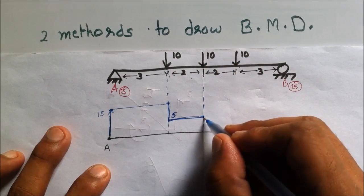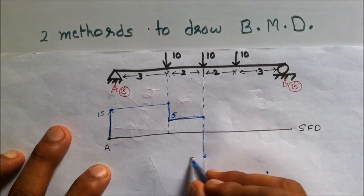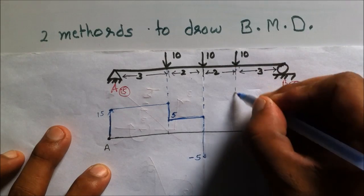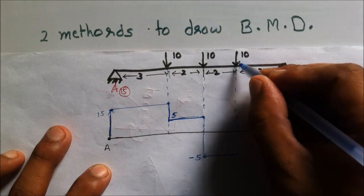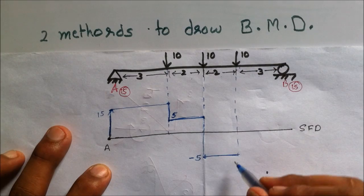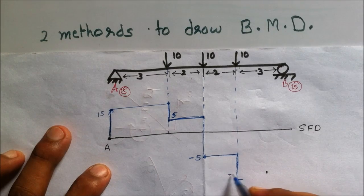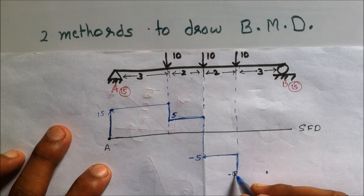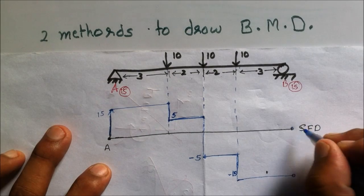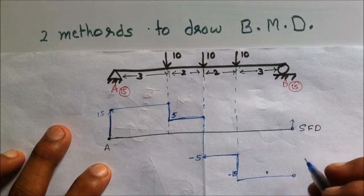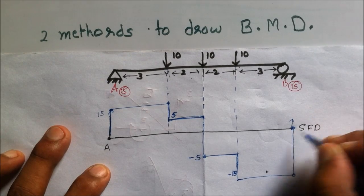From the first to the second load, the shear force remains constant at 5 kilonewton. At the middle load there is a drop of 10 kilonewton, going from 5 to minus 5. From there it stays at minus 5 until the next point, where another 10 kilonewton drop brings it to minus 15 kilonewton. At the last point RB equals 15 kilonewton acts upward, bringing the shear back to zero, completing the shear force diagram.